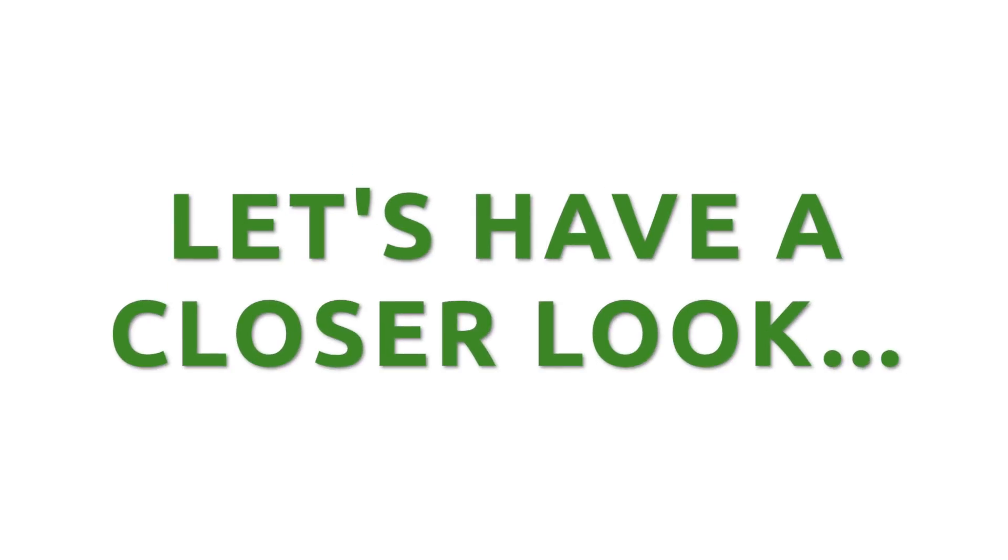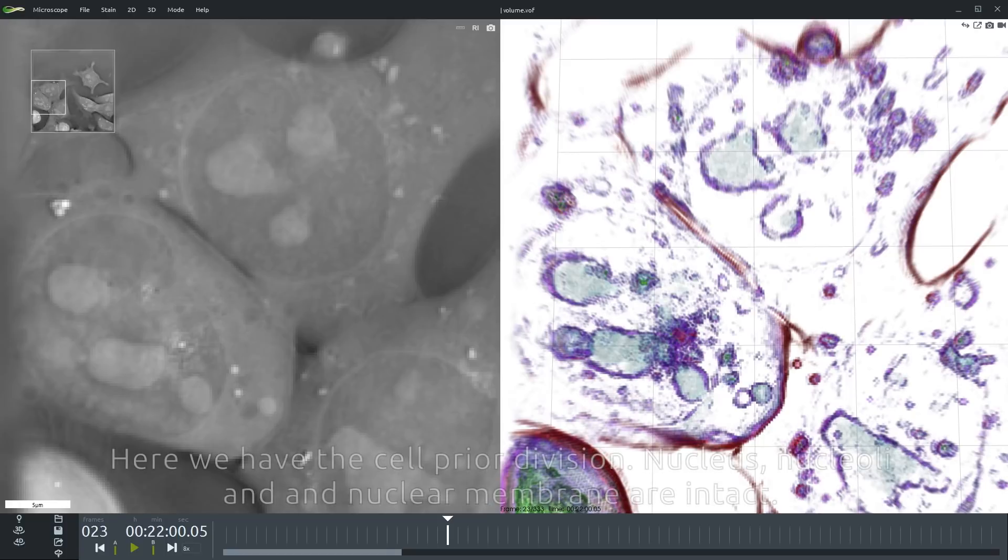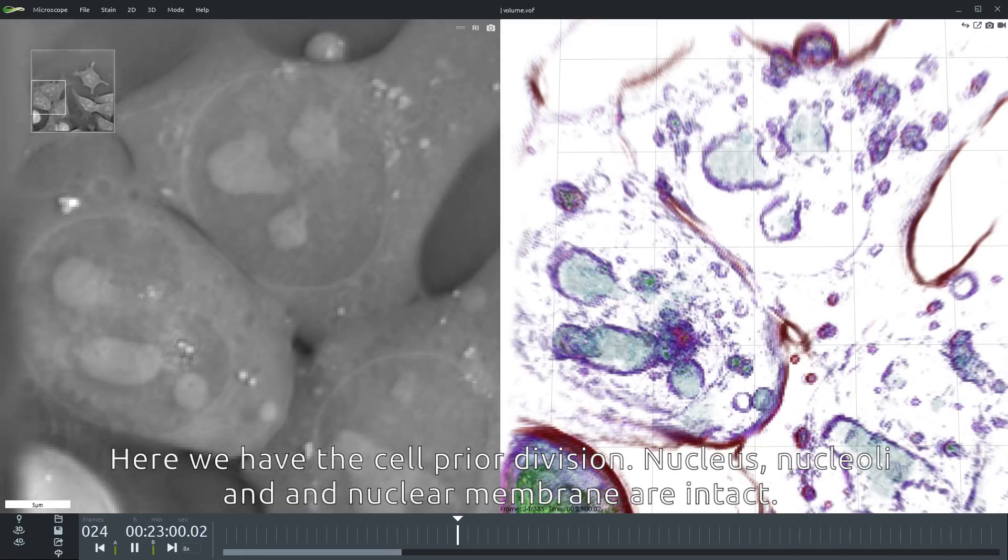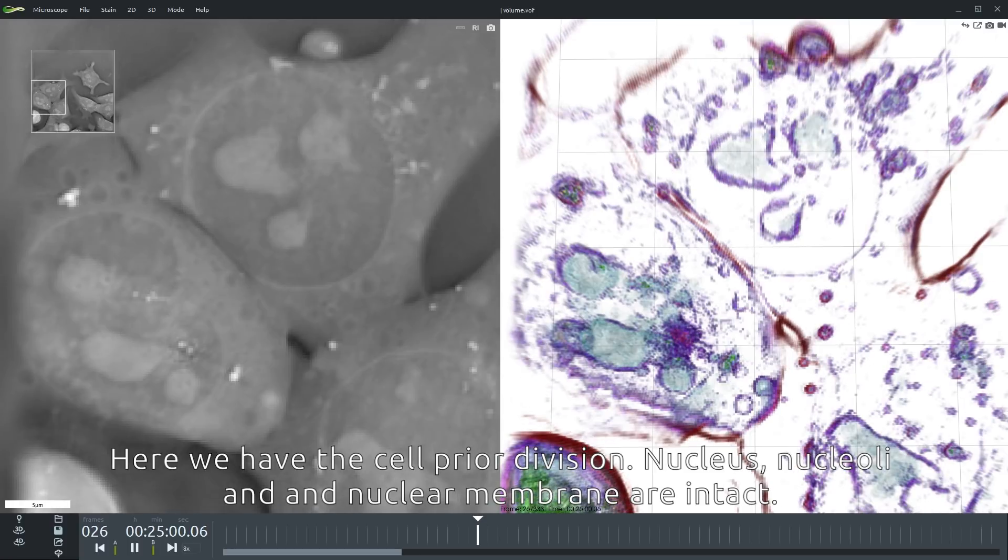But let's analyze the different phases in more detail. Here we have the cell prior to division. Nucleus, nucleoli and nuclear membrane are still intact.